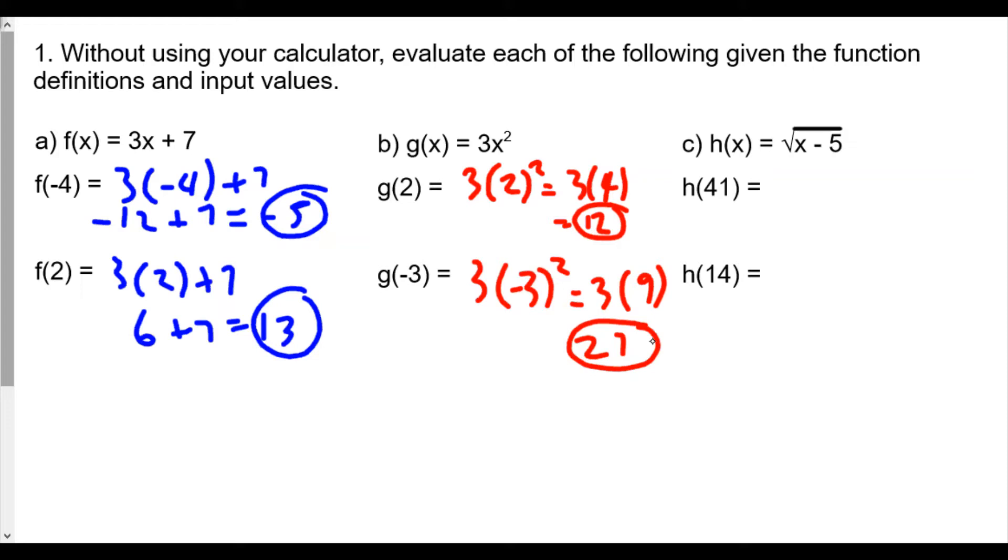Finally for h of x, the rule is going to be the square root of x minus 5. So h of 41 will be the square root of 41 minus 5, which equals the square root of 36, a value of 6. And h of 14 would be the square root of 14 minus 5, or the square root of 9, which is equal to 3.